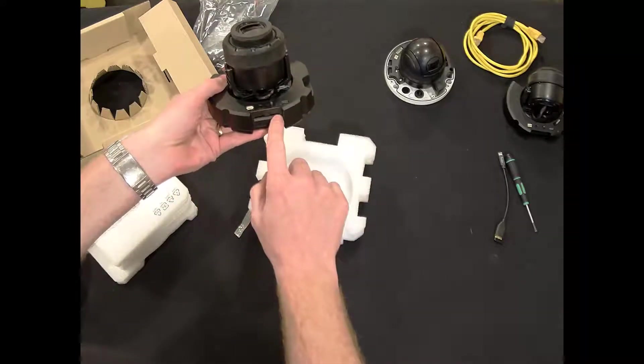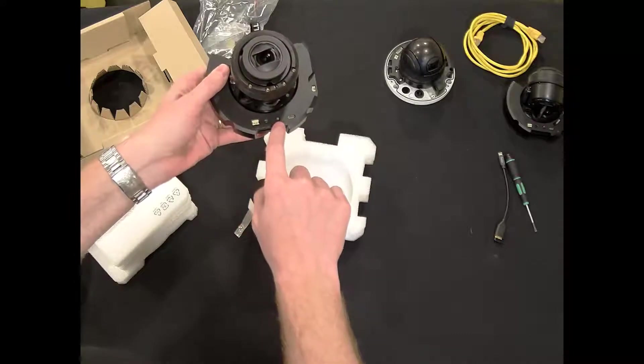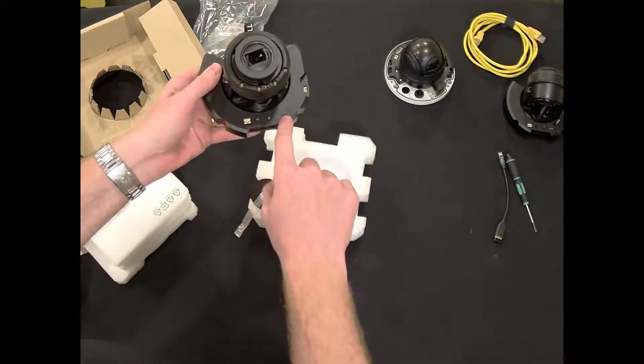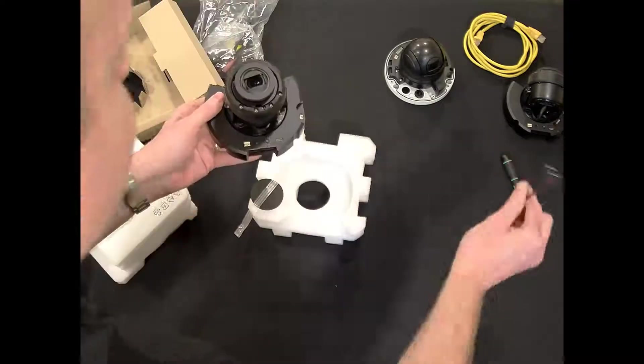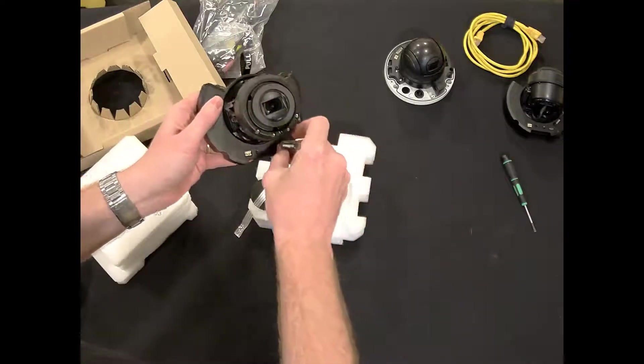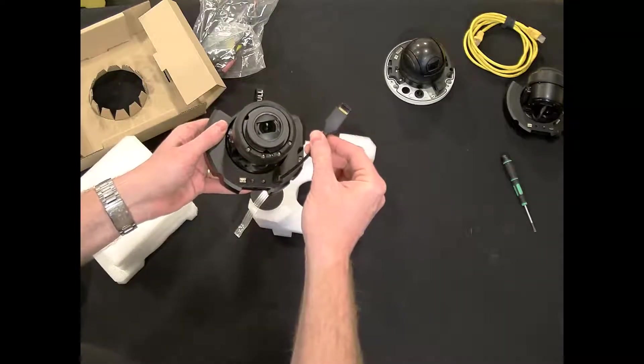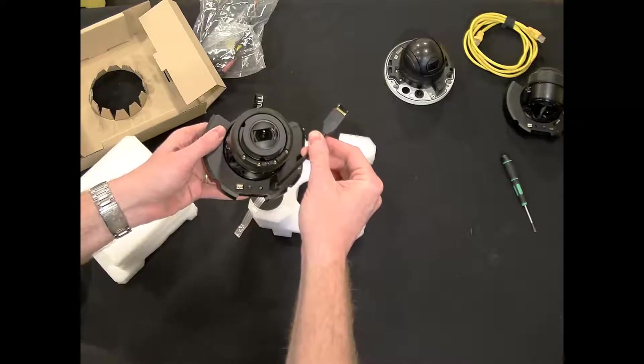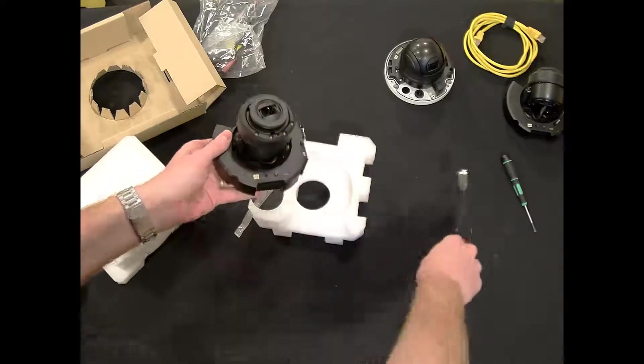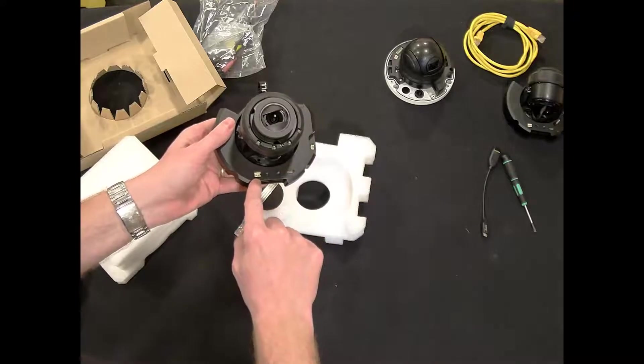we have our dual SD memory card slots, our zoom and focus controls, our micro USB, plug in a Wi-Fi dongle to allow us to do easy aiming and focusing and configuration from our installation app. There's also an analog video output there.